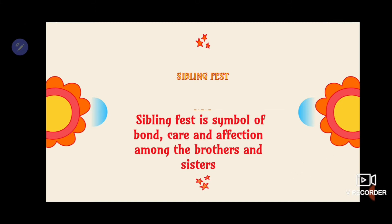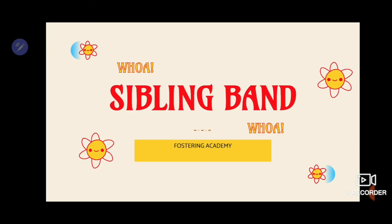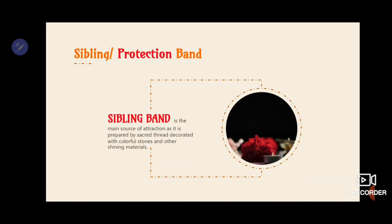The second word is Rakhi. What do we call Rakhi in English? If you can guess, you can again mention it in the comment section. It's a sibling band, or we also call it a protection band. We can use it like: sibling band is the main source of attraction as it is prepared by sacred thread decorated with colorful stones and shining material.